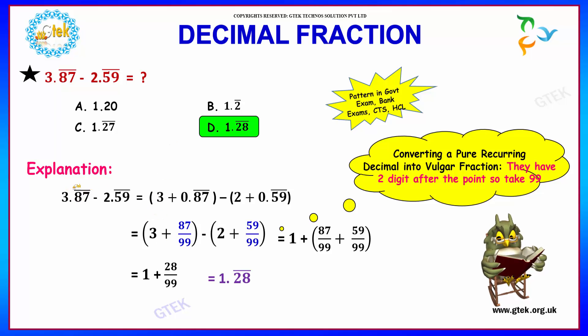Here if you see, 8.7 is the reoccurring part and 5.9 is the reoccurring part. So 3.8̅7̅ minus 2.5̅9̅ can be written as (3 plus 0.87̅) minus (2 plus 0.59̅). 87 is written as 87 by 99, that is the number itself by the number of reoccurring digits which is 2, hence 99. Here you have 59 by 99.